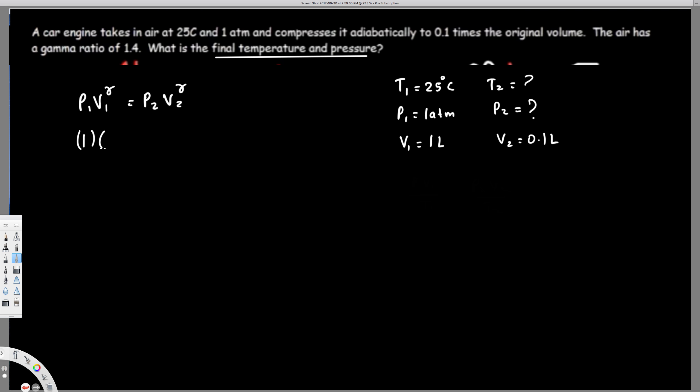...equals P2V2. So 1^1.4 (the gamma ratio is 1.4), and P2 is what we're trying to find, and V2 is 0.1^1.4. One to the power anything is just one, so the whole thing is just one.